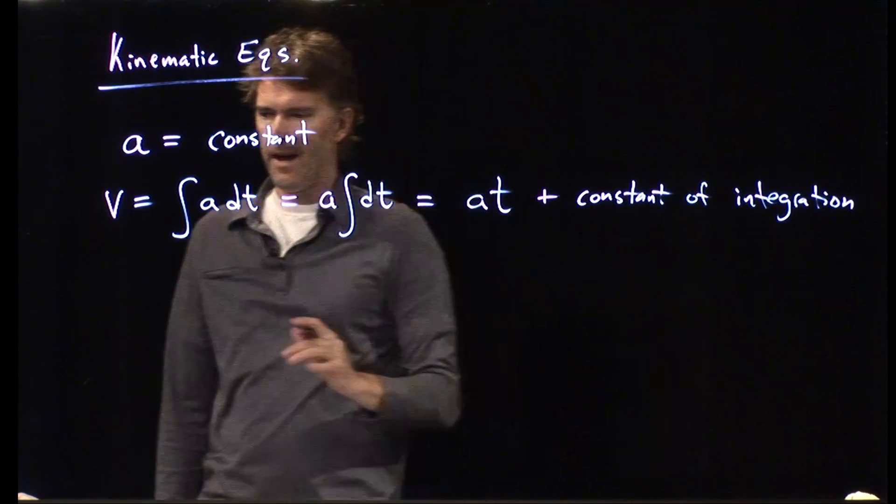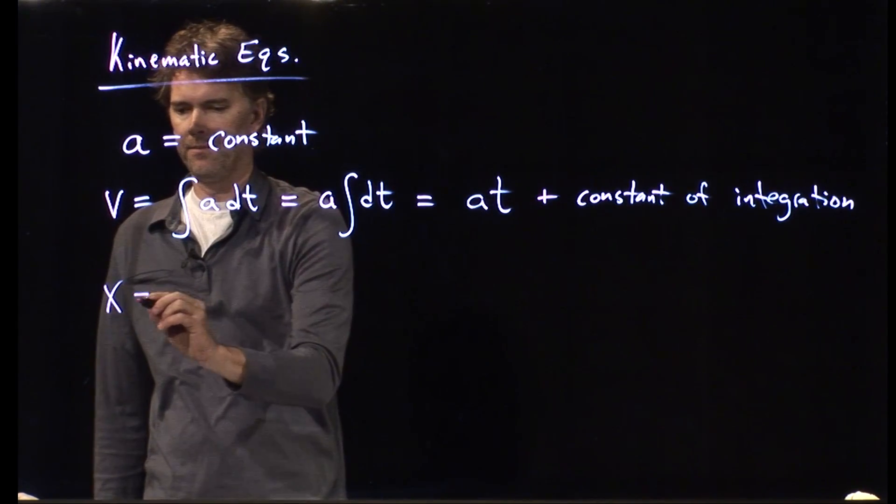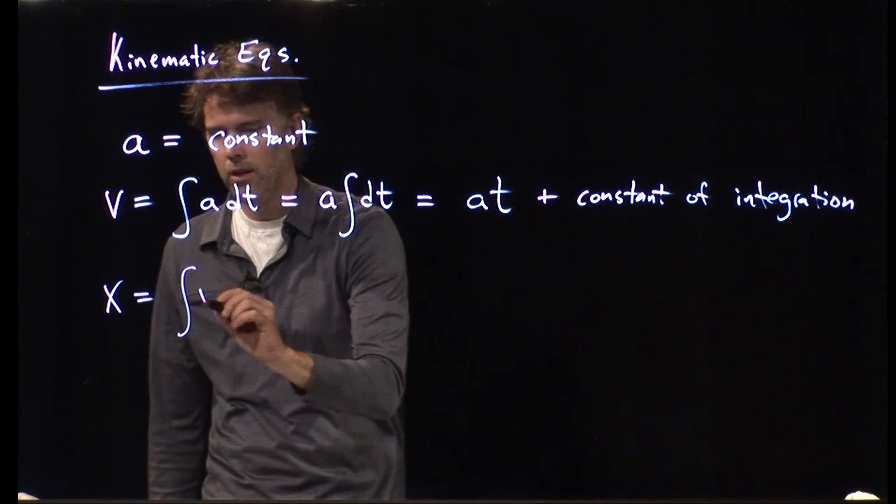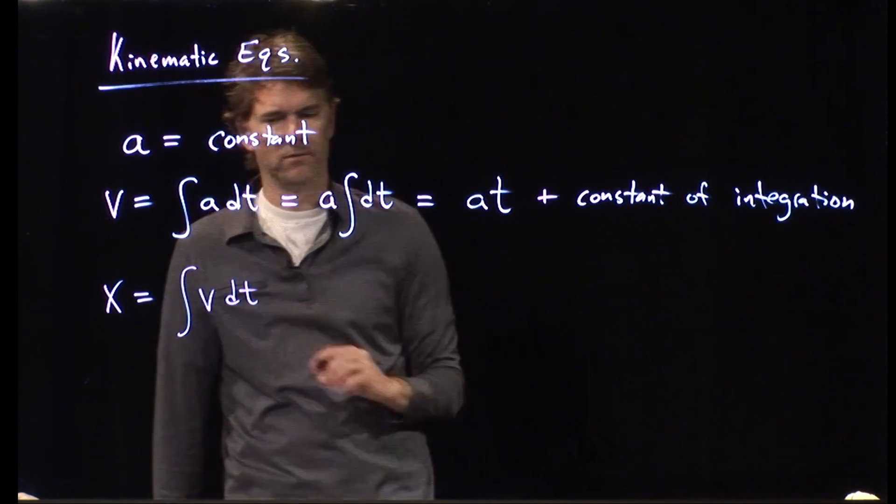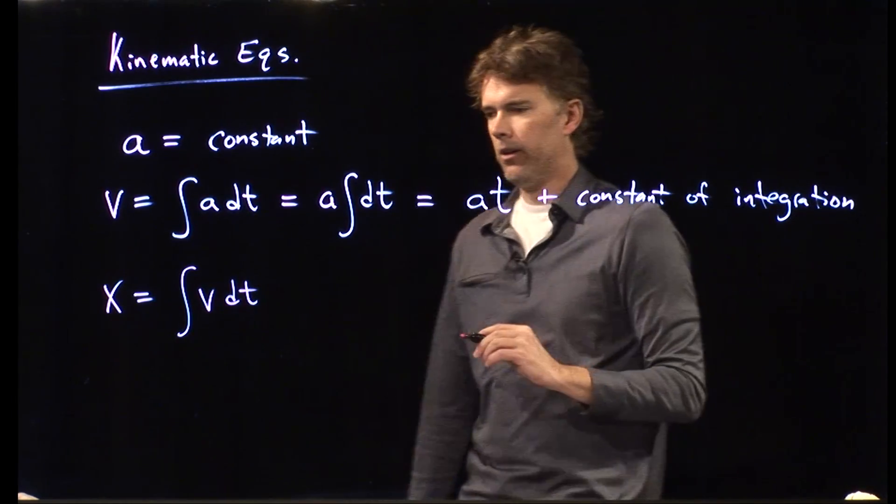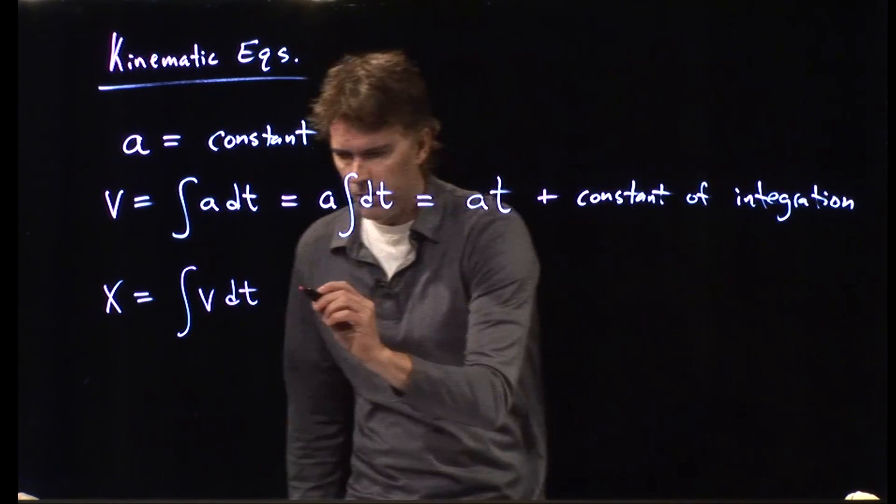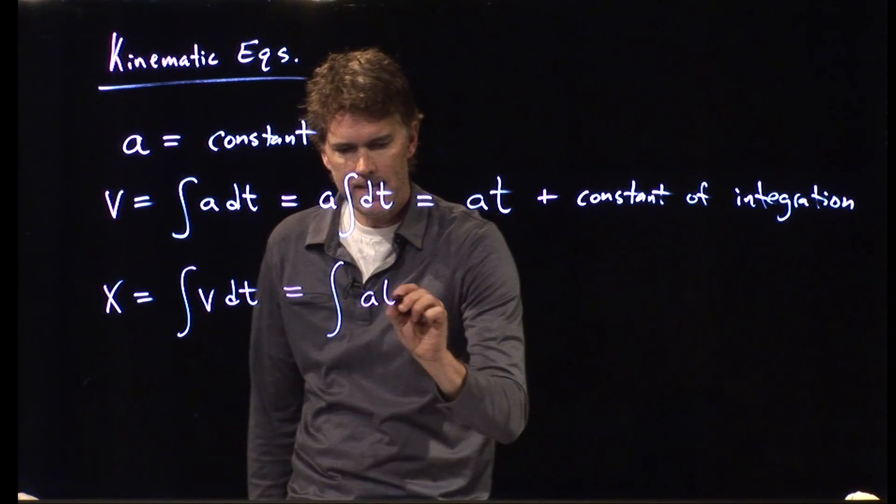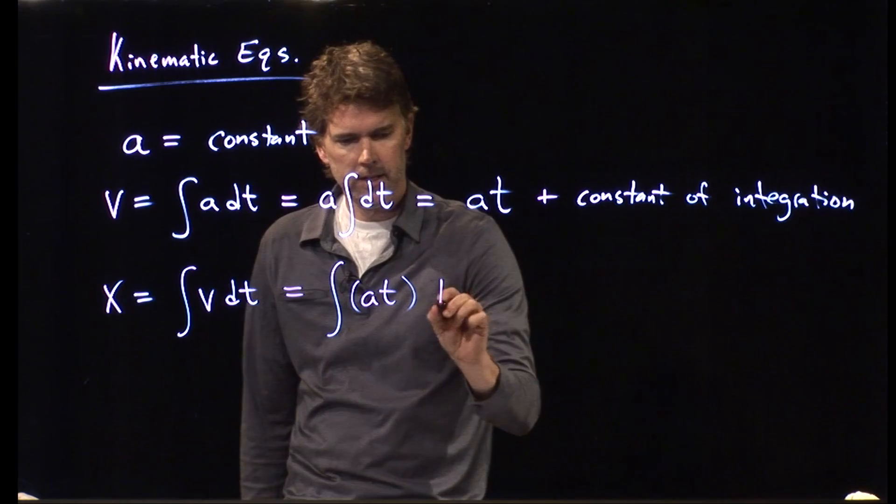Alright, what about position? Position x is the integral of velocity over time. And we know exactly what velocity is now. It is at dt.